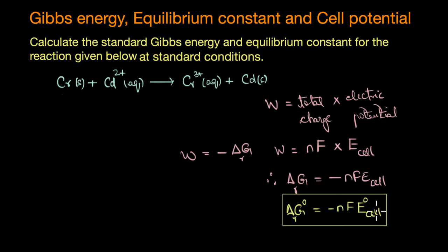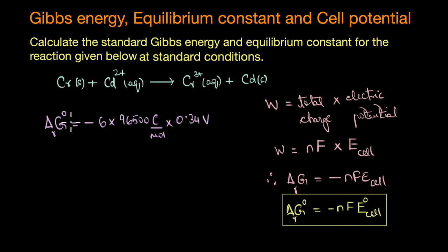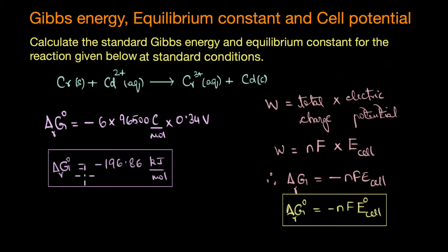We already know E°cell = 0.34 V. Substituting into ΔG° = −nFE°cell, with n = 6 electrons transferred, multiplied by Faraday's constant and 0.34 V, we get the final answer: ΔG° = −196.86 kJ/mol. This is the standard Gibbs free energy for the reaction.